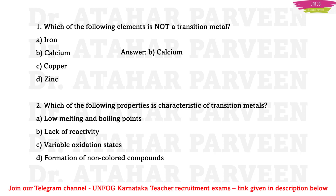MCQ 2: Which of the following properties is characteristic of transition metals? Options: low melting and boiling points, lack of reactivity, variable oxidation states, formation of non-colored compounds. The correct answer is option C — variable oxidation states — which is the speciality of transition metals.